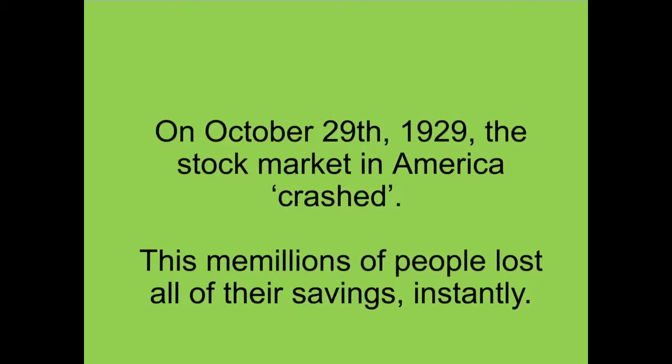The Great Depression started in 1929 on October the 29th when the stock market in America crashed. What this means is that everyone started selling their stocks. People started selling their stocks really fast, and this made people panic and think: if they're selling their stocks, there must be something wrong — I better sell mine as well.